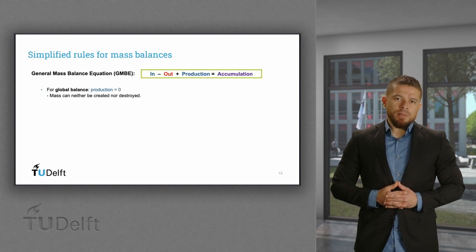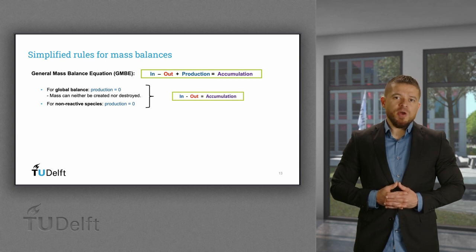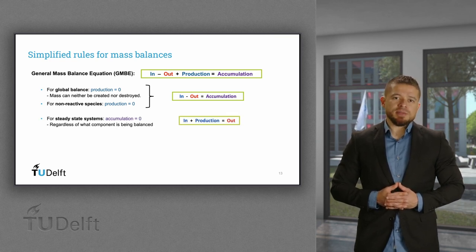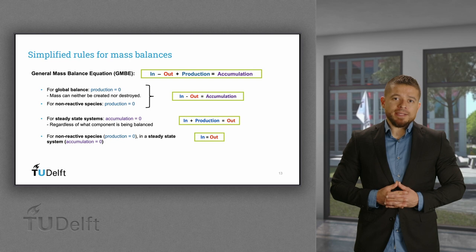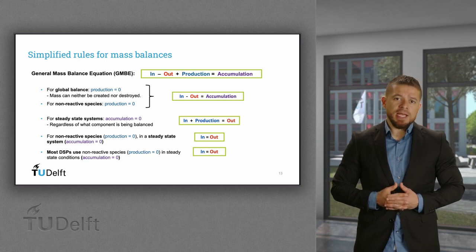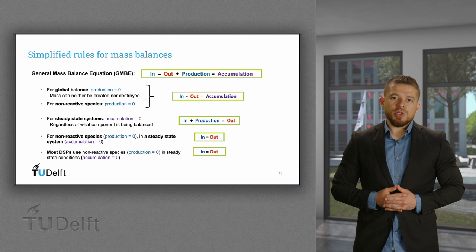When doing mass balances, we can apply some rules to simplify calculations. For example, in all cases for global balances, the production term of the general balances is equal to zero. The same applies to balances by components for non-reactive species. In the case of steady-state systems, there is no accumulation of any species at any point. For systems that combine non-reactive species and steady-state, we get the simplest expression of the general balances, which is often applicable to downstream processes. This gives the conceptual basis for mass balances concerning different operation modes, which you can apply to the different processing units of your process design.